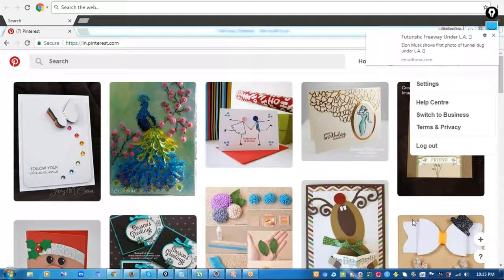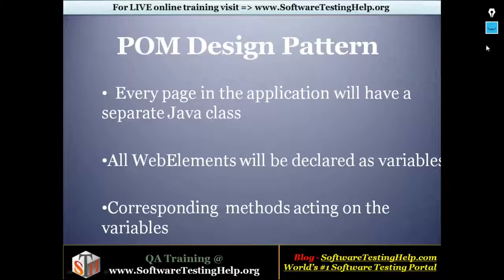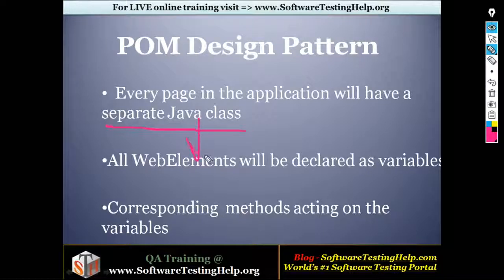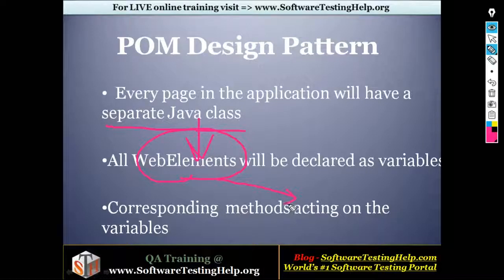Before scripting test cases for the Page Object Model design pattern, you should plan how you're going to handle this. As we know the pages in the application, we are going to segregate them into separate Java classes. Inside each class you will capture all the web elements that you're going to interact with on that particular page, and also the corresponding actions you will be performing on those web elements, written in separate methods.